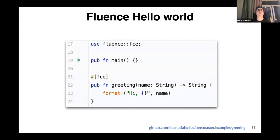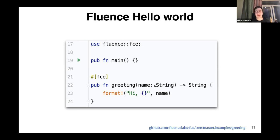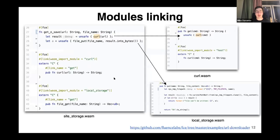You can see that two or three imaginable modules are linked together by linking corresponding imports and exports. On this slide you can see an example of Hello World written for Marine — about six lines of code. Here you can see one function called greeting, dropped by the procedure macro called FCE. This FCE works similar to wasm-bindgen, and importantly you can operate on Rust types like strings, vectors, records, structures, and so on.